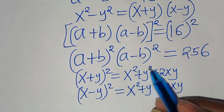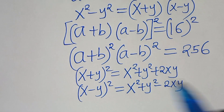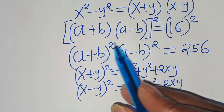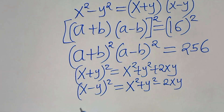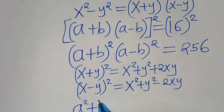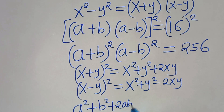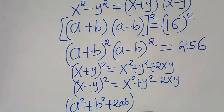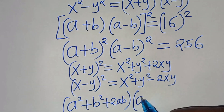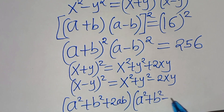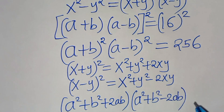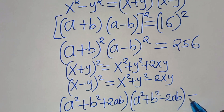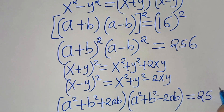Applying these two algebraic identities, a plus b to the power of 2 becomes a squared plus b squared plus 2ab, multiplying by a squared plus b squared minus 2ab, and this is equal to 256.